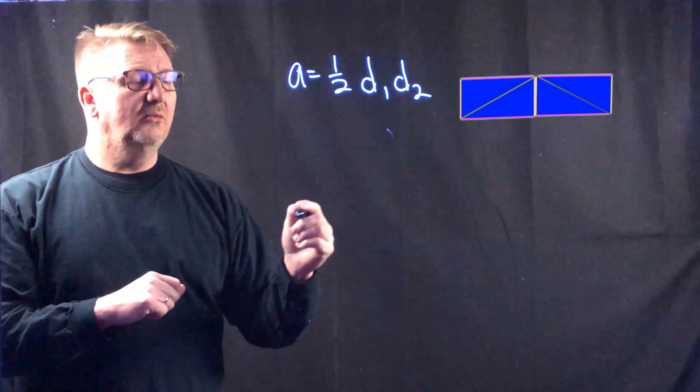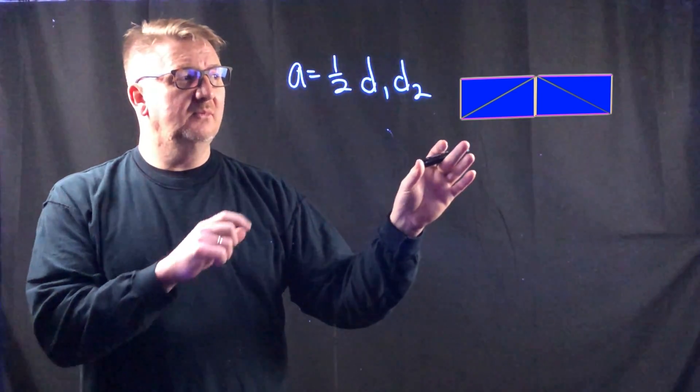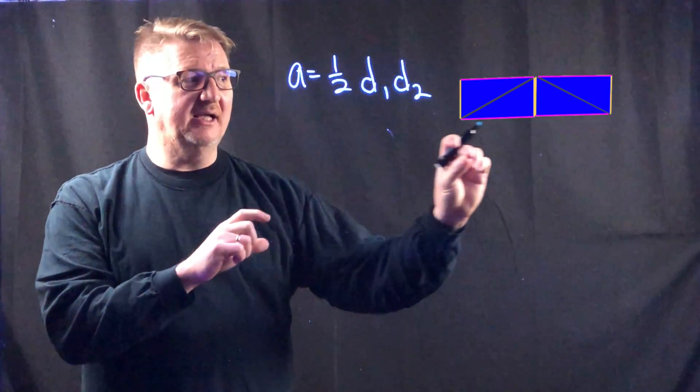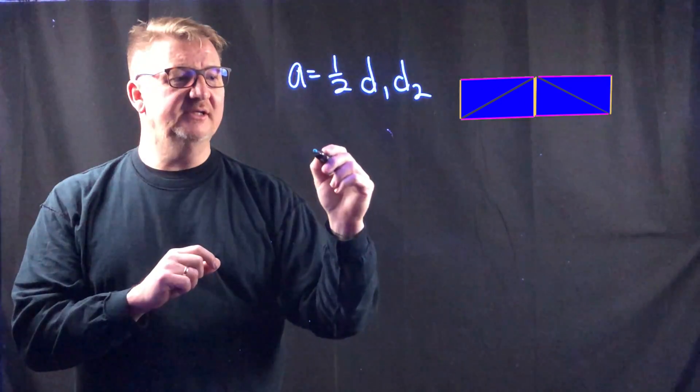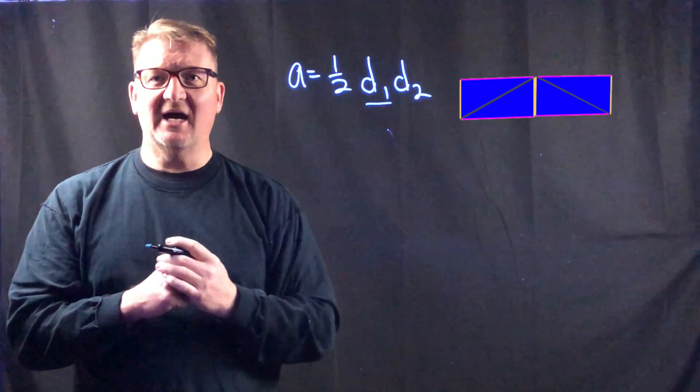So what I've done now, notice that the pink line goes all the way across the bottom. So what I have is one diagonal that's entirely intact.